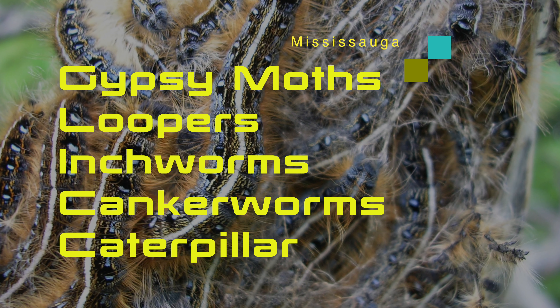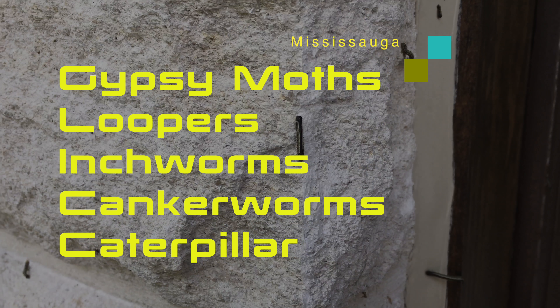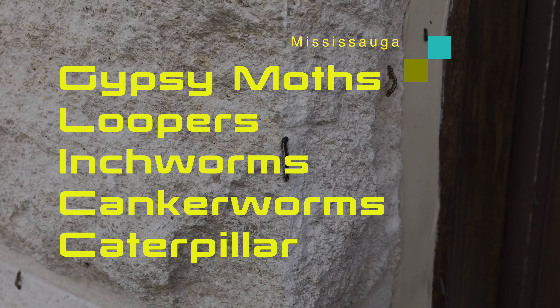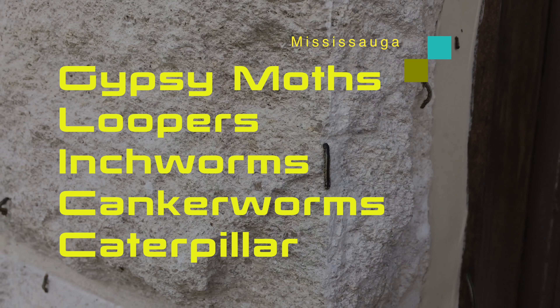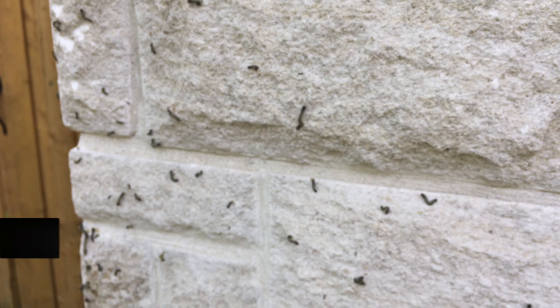It is the larva or the caterpillar stage of these moths that feeds on leaves, particularly of oak trees.